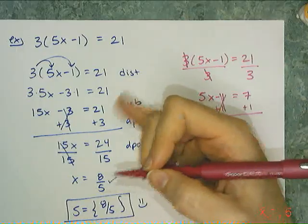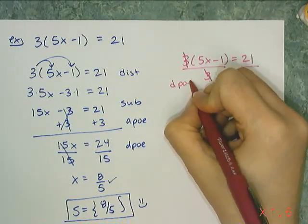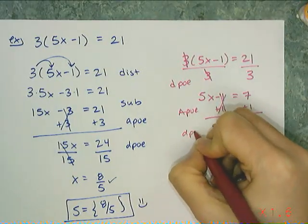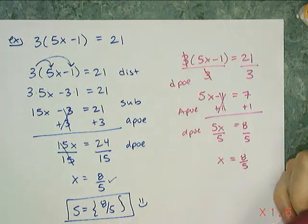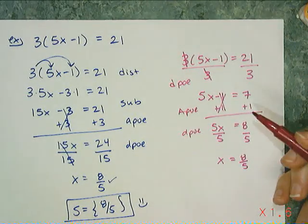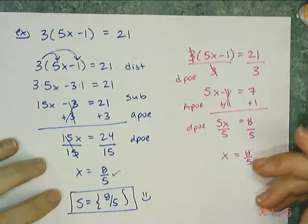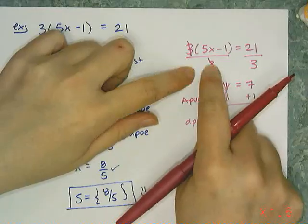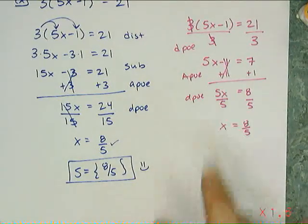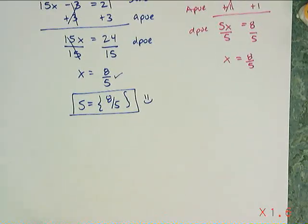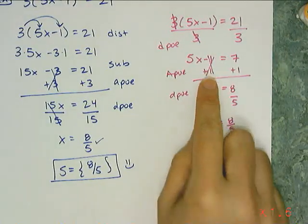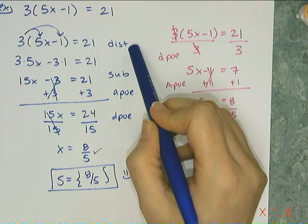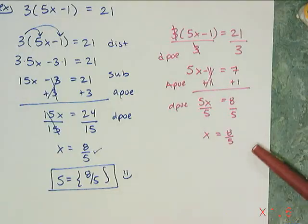I'm not actually using the distributive property at all — just the division property, then the addition property, then the division property again. But don't go crazy with this, because you have to be super careful. You can't always do this. I'll show you an example where you actually don't want to use this trick — specifically when there are other terms outside the multiplication.